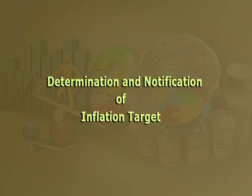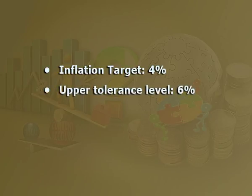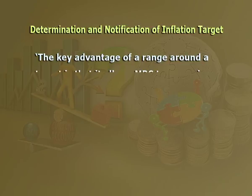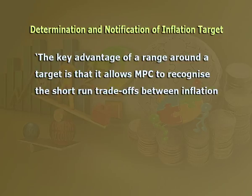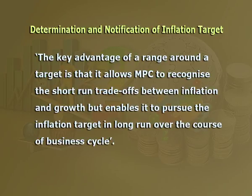In exercise of the powers conferred under the Reserve Bank of India Act 1934, the central government in consultation with RBI fixed the inflation target for the period beginning August 5, 2016 and ending March 31, 2021 as follows: number one, inflation target 4%; number two, upper tolerance level 6%; number three, lower tolerance level 2%. While setting this target, the government elaborated that inflation targeting in India will also consider growth dimensions. The key advantage of a range around a target is that it allows the MPC to recognize short-run trade-offs between inflation and growth, while enabling it to pursue the inflation target in the long run over the course of the business cycle.